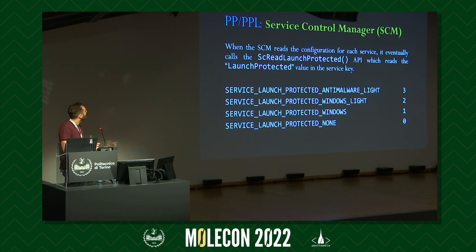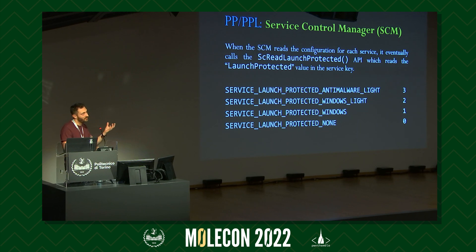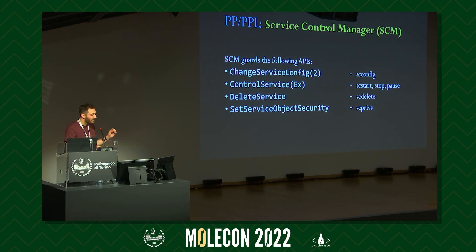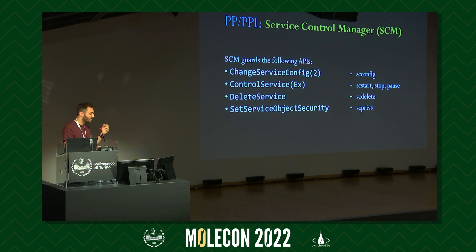Speaking of PP or PPL, services are managed by the service control manager, which manages process/service creation and has various controls over services. It reads service configuration from registry keys. The service control manager runs as WinTCB — the second most privileged signer — so it can dominate all processes apart from the system process. Any user who can reach the service control manager level could theoretically access all other protected processes. Microsoft is aware of this and guards certain APIs to prevent modification to protected services.